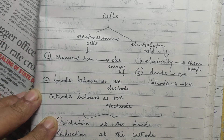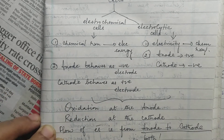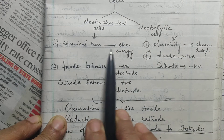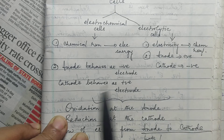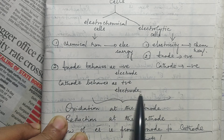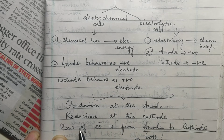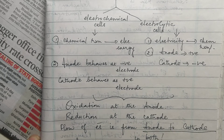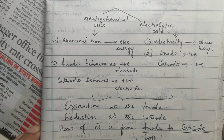A quick revision of electrochemistry: what is the difference between electrochemical cells and electrolytic cells? In electrochemical cells, chemical reaction is converted into electrical energy, whereas in electrolytic cells, electricity must be passed through to make a chemical reaction occur. In an electrochemical cell, the anode is a negative electrode and the cathode is positive, whereas in an electrolytic cell, the anode is positive and the cathode is negative. Oxidation always takes place at the anode and reduction at the cathode, and the flow of electrons is from anode to cathode in both cells.